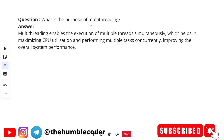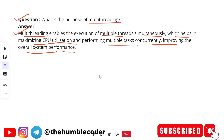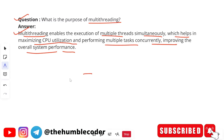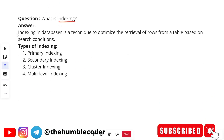Next question: what is the purpose of multi-threading? Multi-threading enables the execution of multiple threads simultaneously, which helps maximize CPU utilization and perform multiple tasks concurrently, improving overall system performance. Without multi-threading, one task would complete before the next starts, which is very time consuming. Multi-threading solves this problem by allowing multiple tasks to run concurrently.